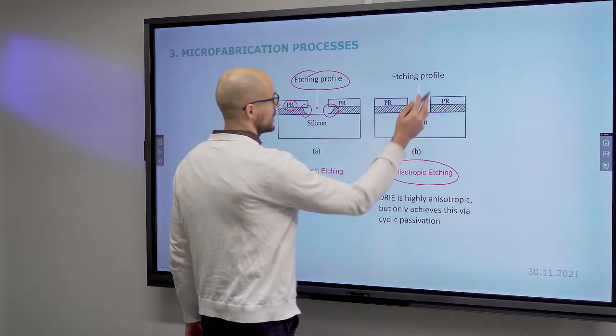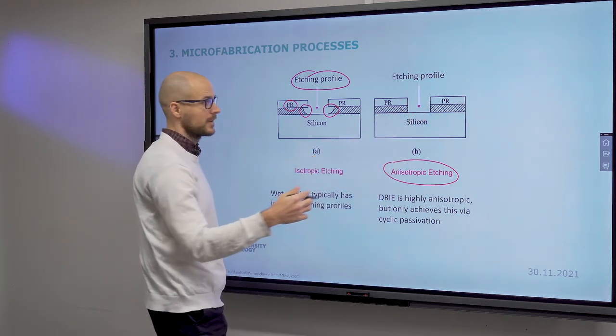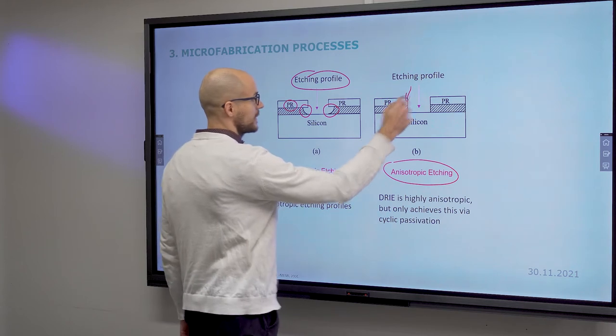If you have anisotropic etching such as deep reactive ion etching, you can get very straight sidewalls.